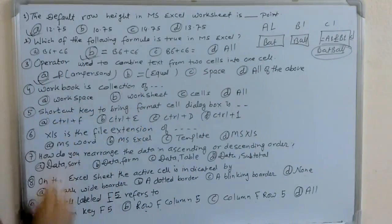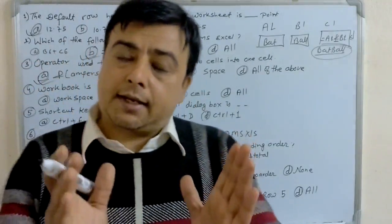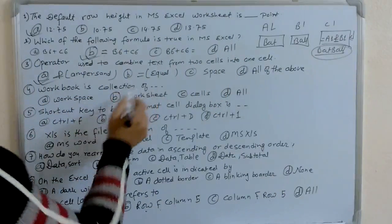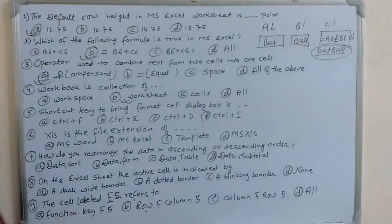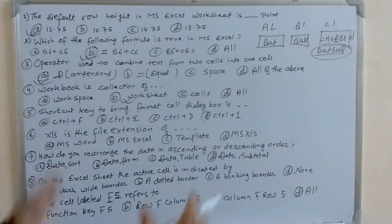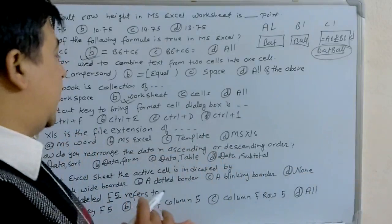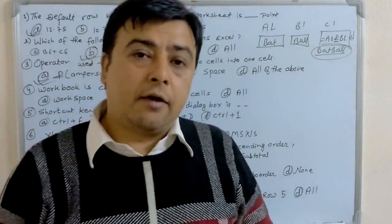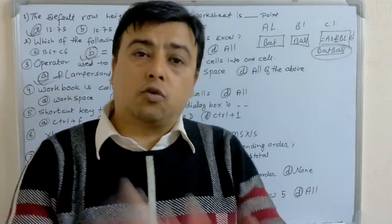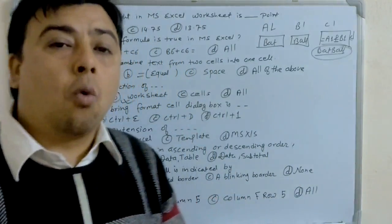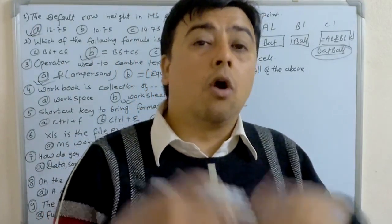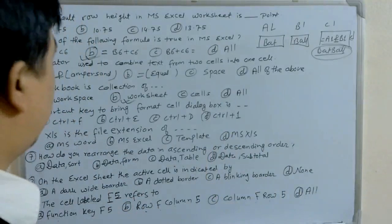Workbook is the collection of worksheets. Collection of worksheets is known as a workbook, and collection of workbooks is known as a workspace. When you open an Excel file, you see Sheet 1, Sheet 2, Sheet 3 — each is an individual worksheet. Opening the Excel file means opening the workbook. So a group of worksheets is known as a workbook.